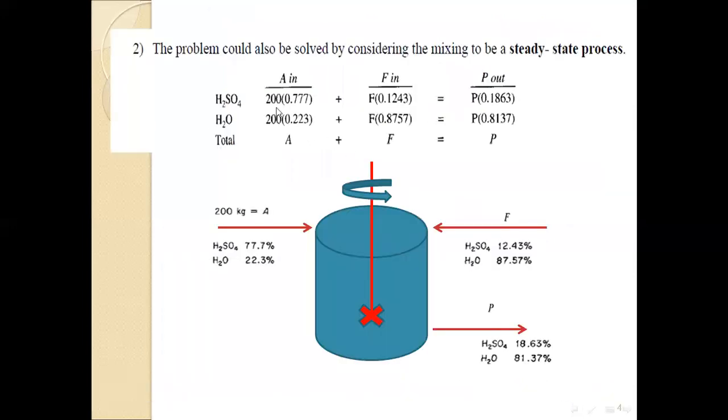The second method assumes a steady state solution or steady state process. You can see that A, which is 200 kg, can be added to the old or weak solution to produce the product. In this process, you can perform two independent material balance equations.